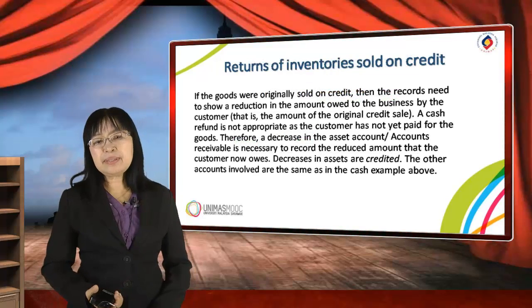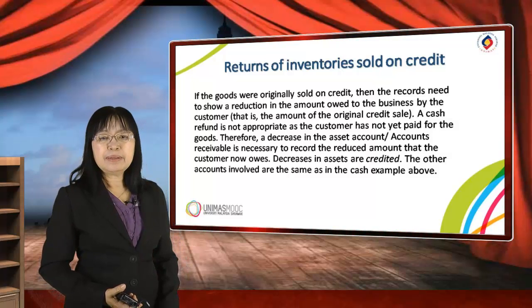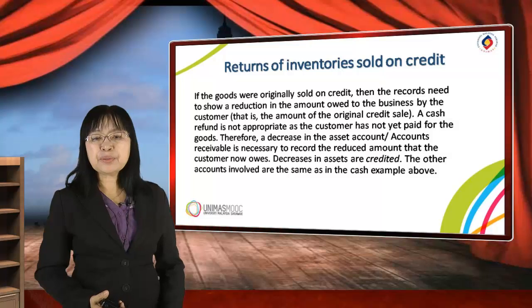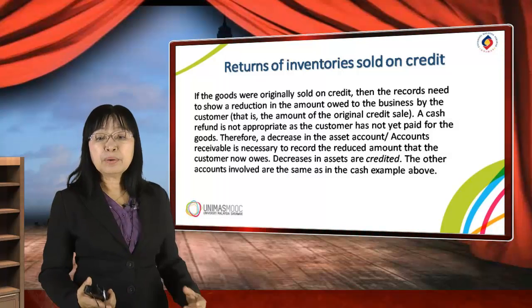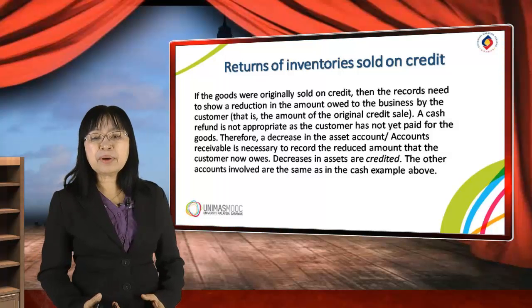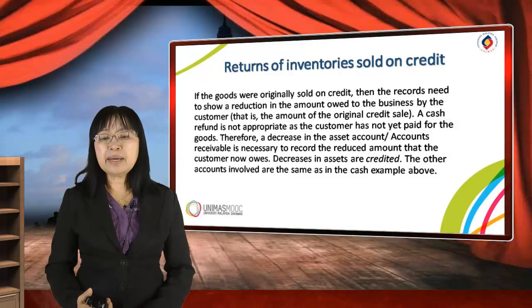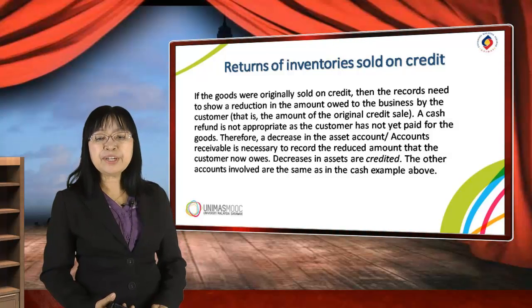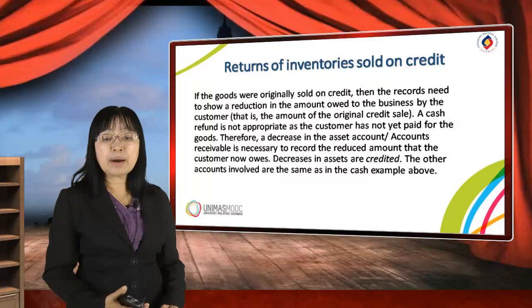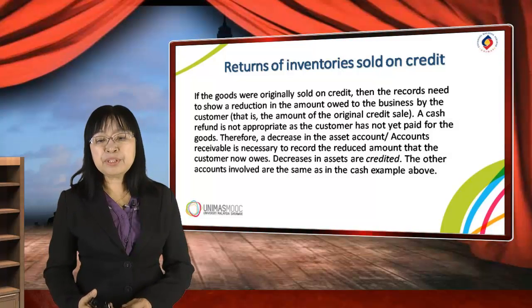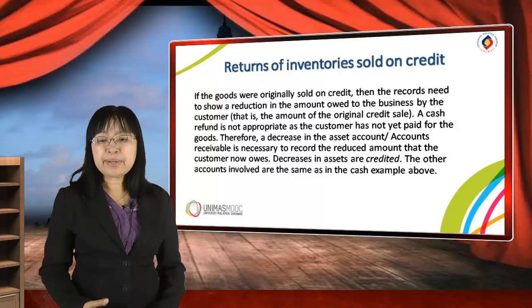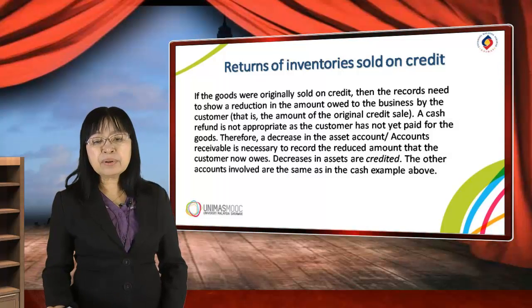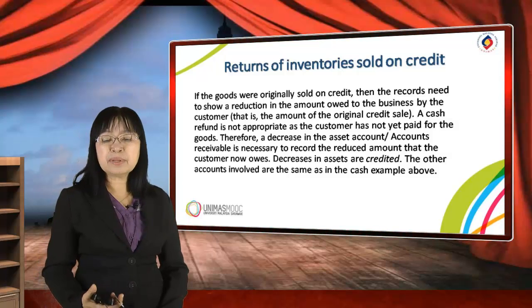Let's look at another transaction: returns of inventory sold on credit. If goods were originally sold on credit, the records need to show a reduction in the amount owed to the business by the customer — that is, the original credit sales amount. A cash refund is not appropriate as the customer has not yet paid for the goods. Therefore, a decrease in the asset account — accounts receivable — is necessary to reflect the reduced amount the customer owes. Decreases in assets are credited.